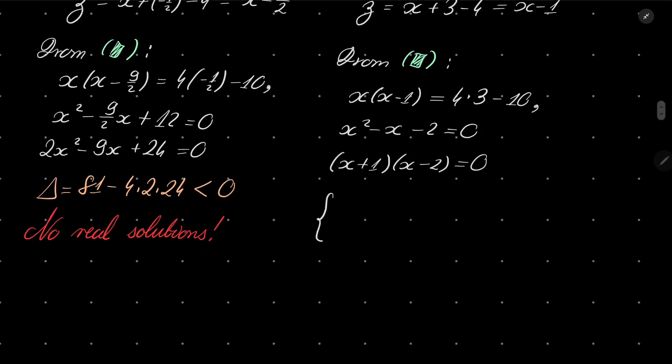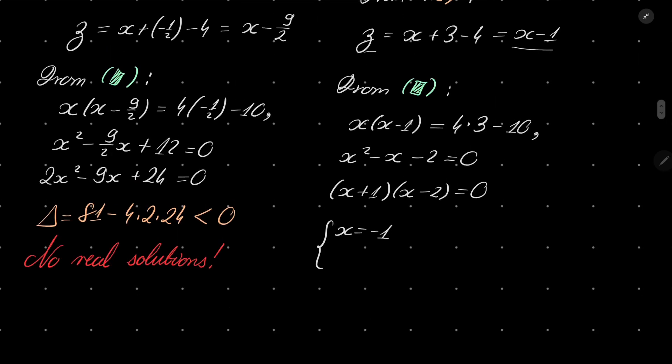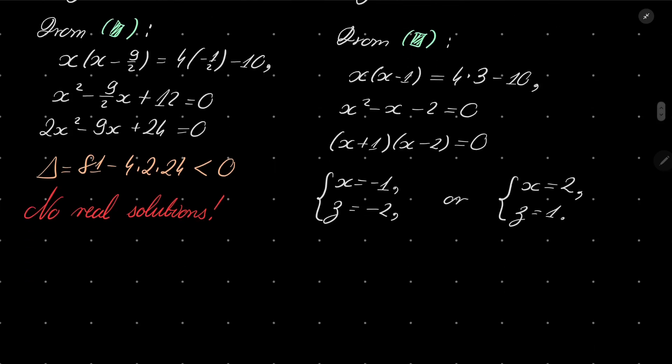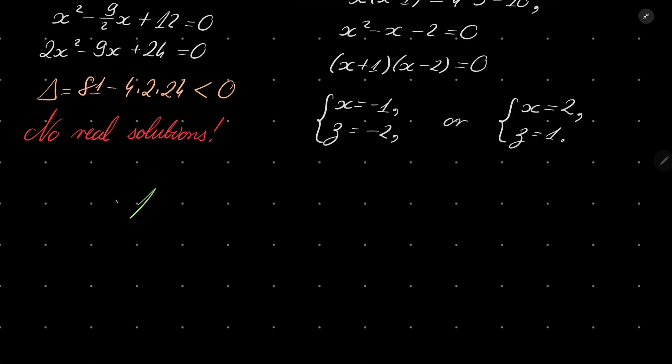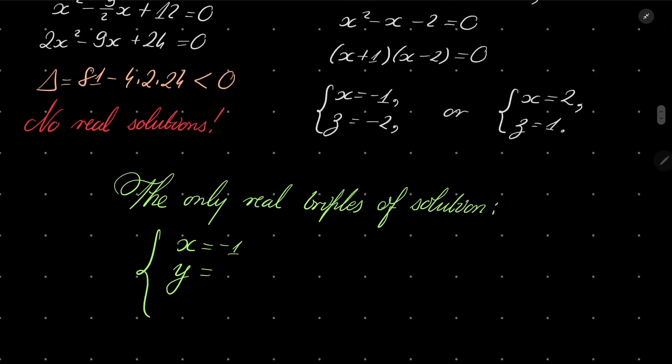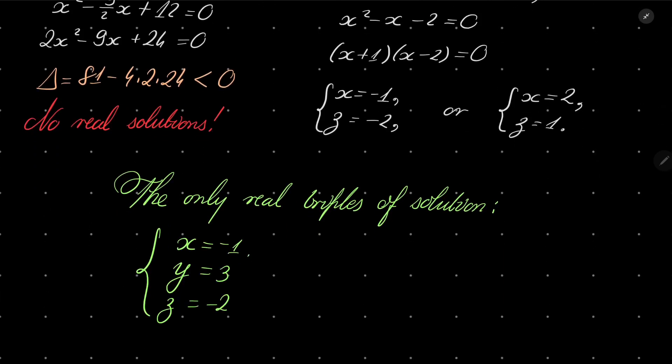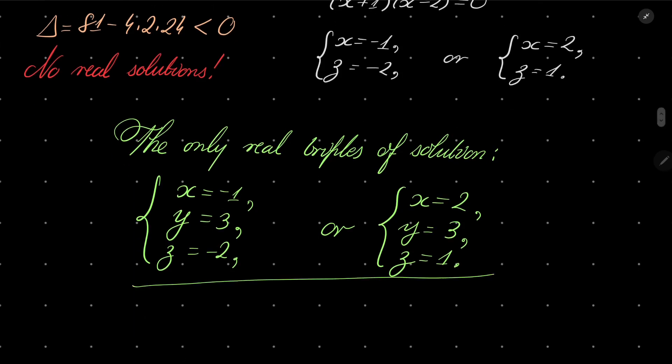We can easily factor this: x plus 1 times x minus 2 equals 0. So we have two possibilities. If x is minus 1, then z equals minus 2. Or x equals 2, and then z equals 1. So we have only two triples of solutions: either x is minus 1, y is 3, and z is minus 2, or x is 2, y is 3, z is 1. That is our solution set.